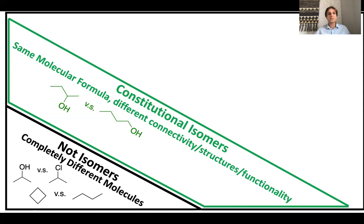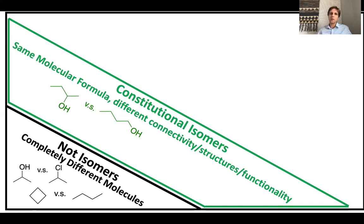The two molecules shown here both have the same formula — four carbons, ten hydrogens, and one oxygen — but the position of the OH group differs. On the left, the OH is on the second carbon, making it 2-butanol; on the right, it's on the first carbon, making it 1-butanol. These are different molecules differing in connectivity. Going along the chain, the second carbon on the left is connected to two carbons, one hydrogen, and one oxygen, whereas on the right it's connected to two carbons and two hydrogens.